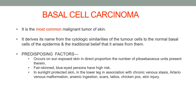Basal cell carcinoma is the most common malignant tumor. It derives its name from the cytological similarities of tumor cells to the normal basal cells of the epidermis. Predisposing factors include sun-exposed skin in direct proportion to pilosebaceous units, fair-skinned blue-eyed persons, and in sunlight-protected lower leg — chronic venous stasis and arteriovenous malformation. Other associations include arsenic ingestion, scars, tattoos, chickenpox and skin injury.